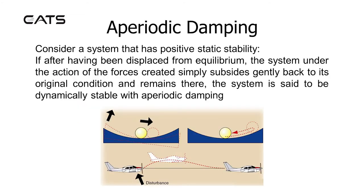Aperiodic damping: Consider a system that has positive static stability. If, after having been displaced from equilibrium, the system under the action of the forces created simply subsides gently back to its original condition and remains there, the system is said to be dynamically stable with aperiodic damping.